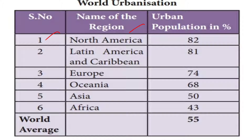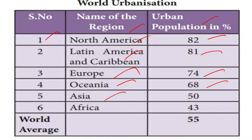Here is the urban population by region in percentage: North America 82%, Latin America and Caribbean 81%, Europe 74%, Oceania 68%, Asia 50%, Africa 43%. The world average urban population is 55%.